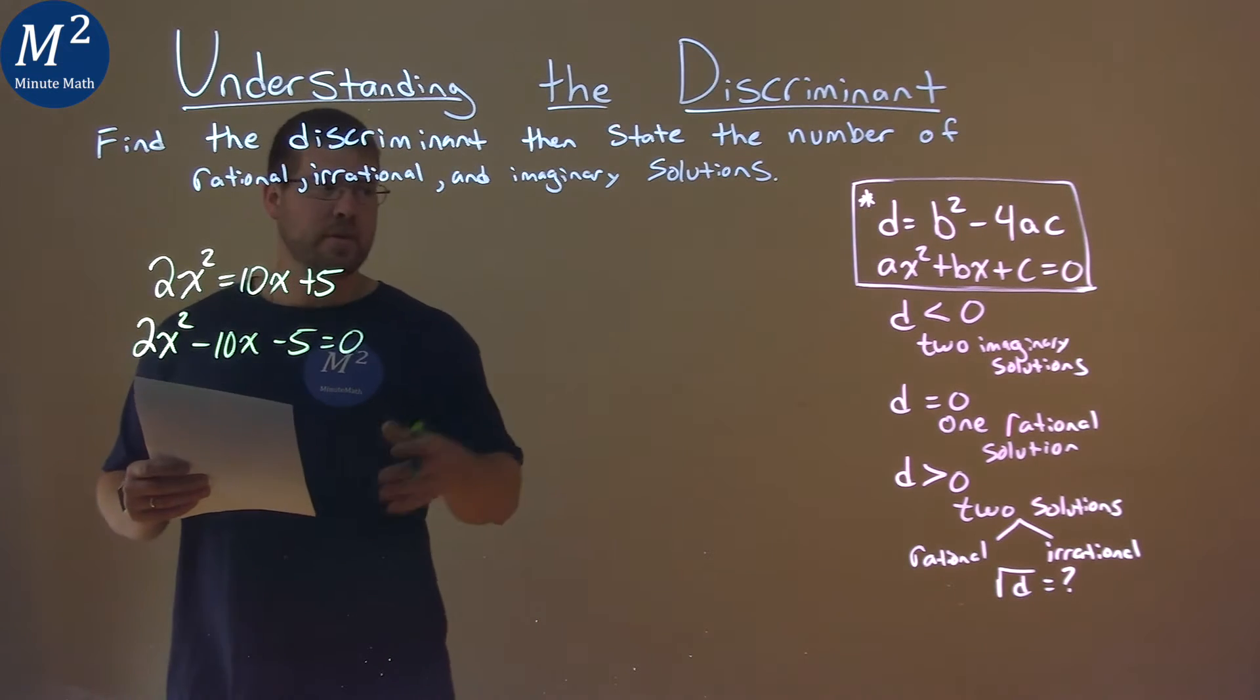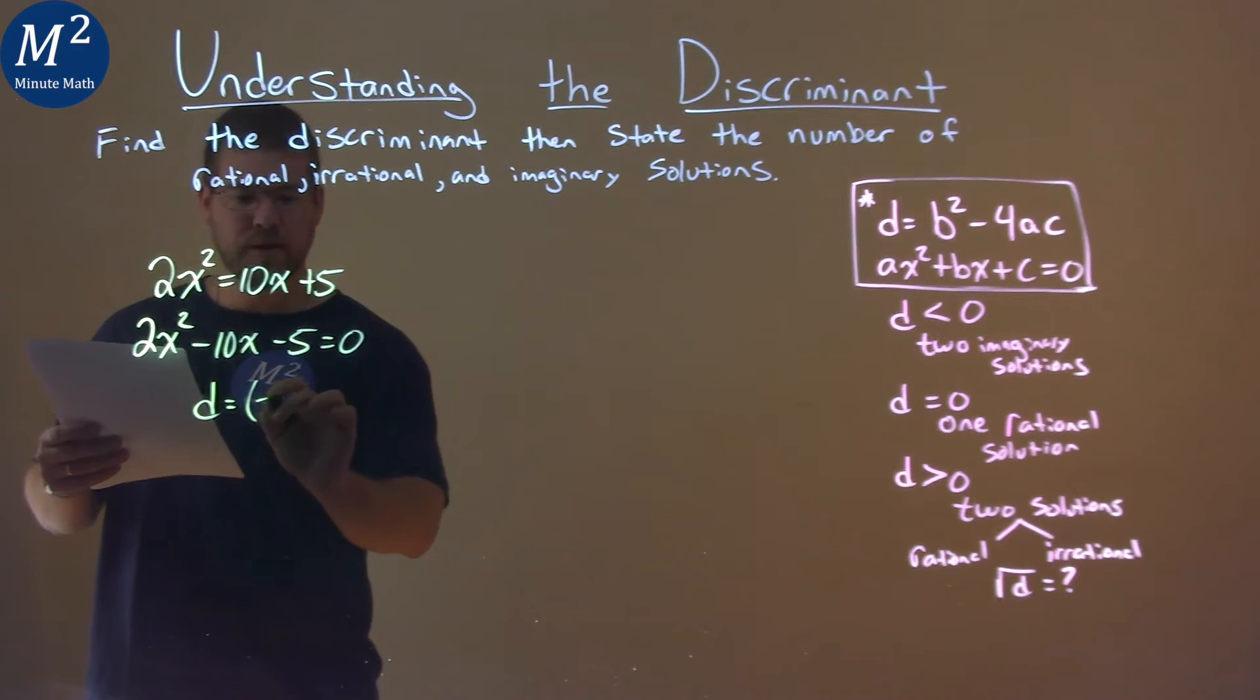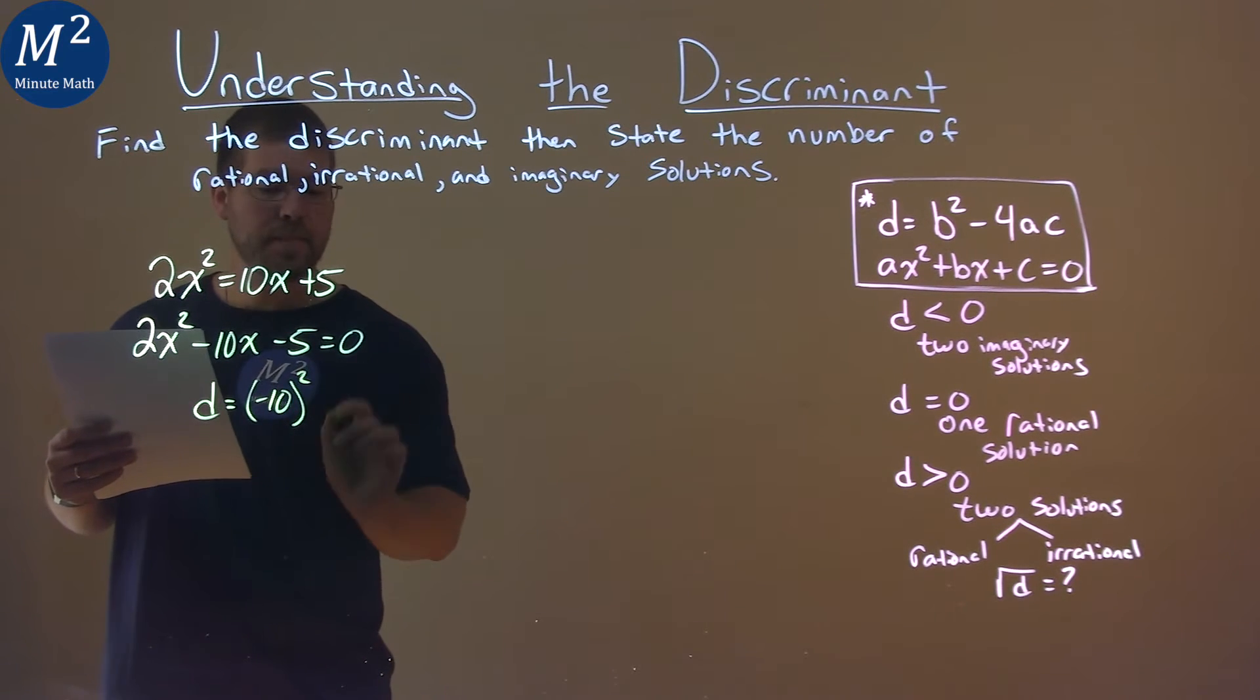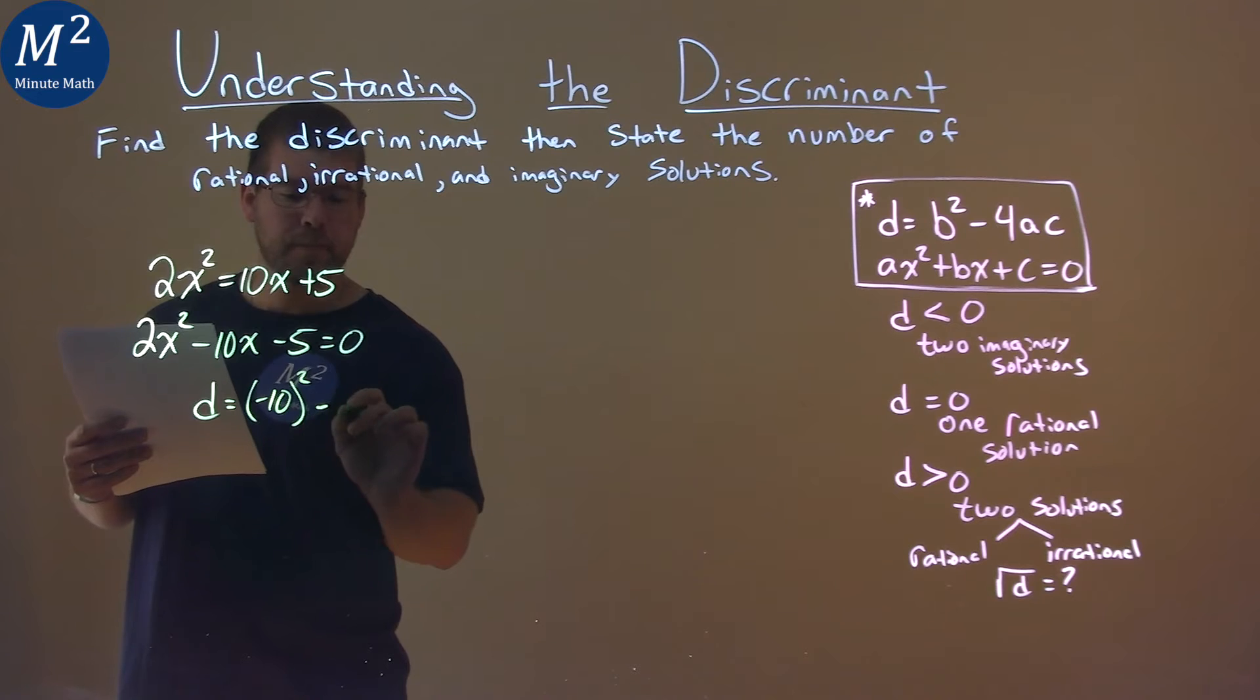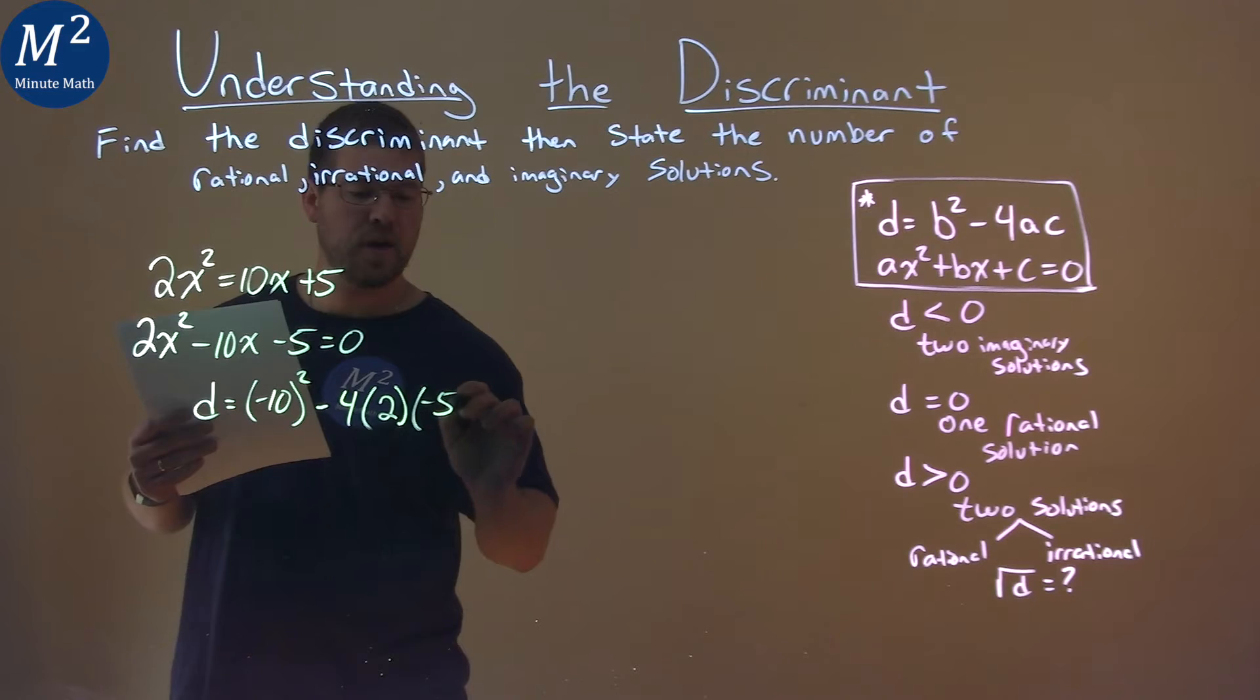Well, now we can use our formula for the discriminant. Our discriminant is equal to our b value, which is negative 10, squared minus 4 times our a value, which is 2, times our c value, which is negative 5.